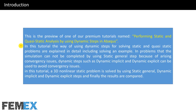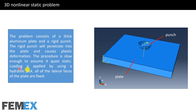In problems where the simulation cannot be completed by using a static general step because of convergency issues, dynamic steps such as dynamic implicit and dynamic explicit can be used to avoid convergency issues. In this tutorial, a 3D nonlinear static problem is solved by using static general, dynamic implicit, and dynamic explicit steps, and finally the results are compared.